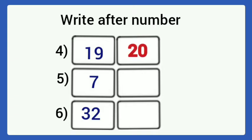Write here. Next number is 7. Which number comes after 7? It is 8. Then, next number is 32. After 32, the number is 33.